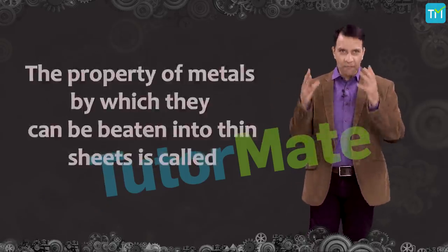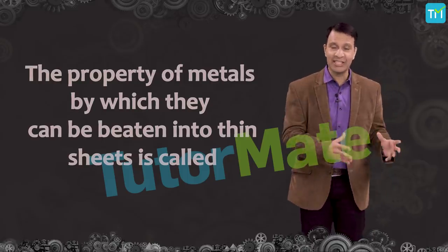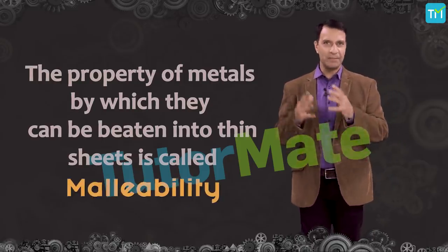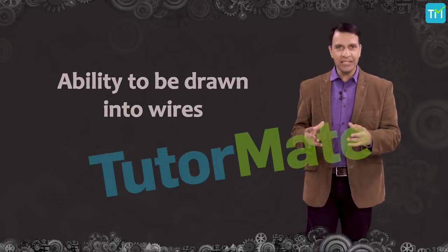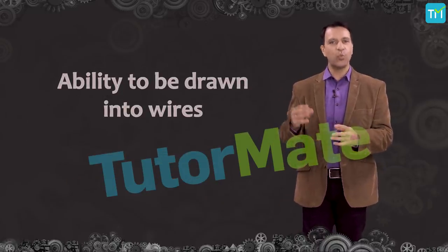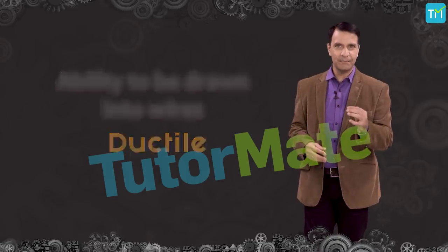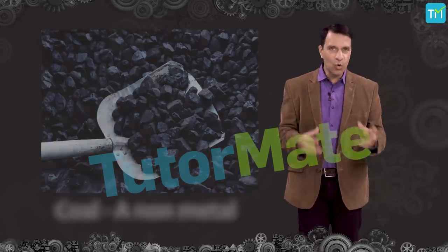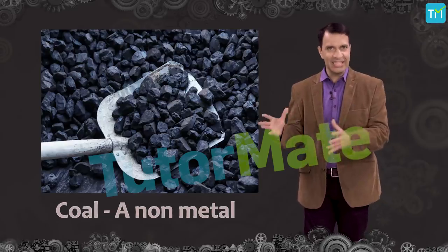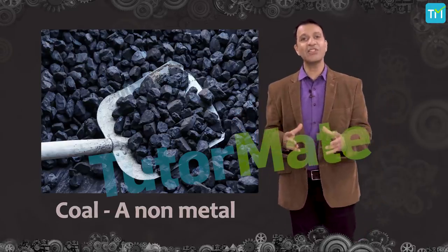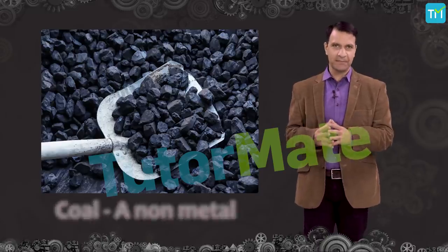The property of metals by which they can be beaten into thin sheets is called malleability. Similarly, their ability to be drawn into wires makes them ductile. Materials like coal and lead do not possess these characteristics, and hence they are classified as nonmetals.